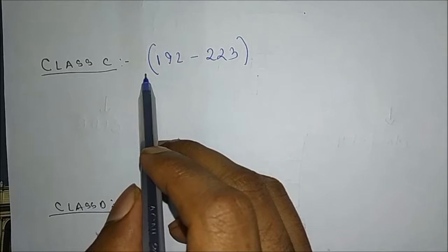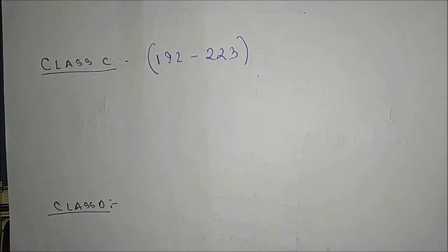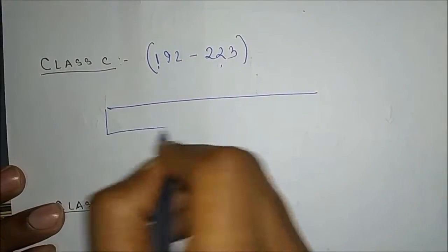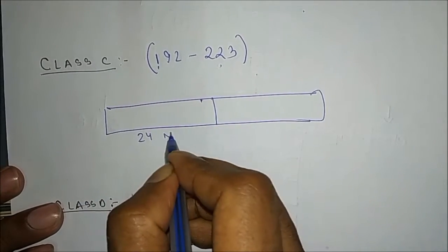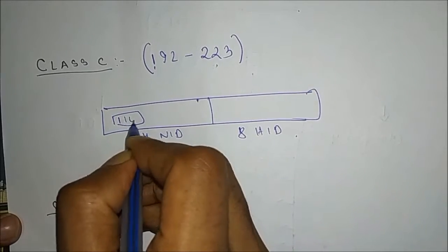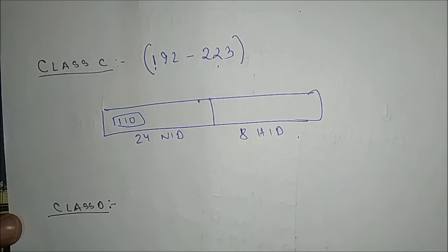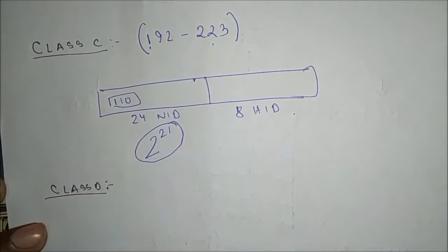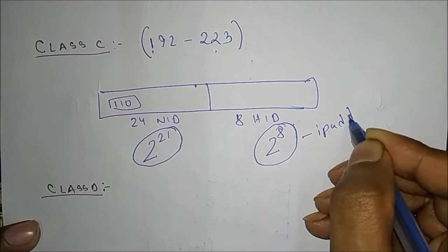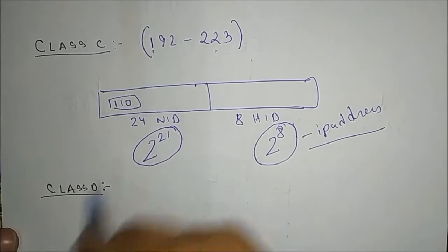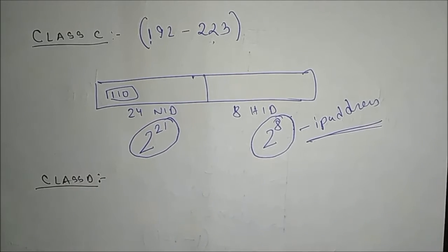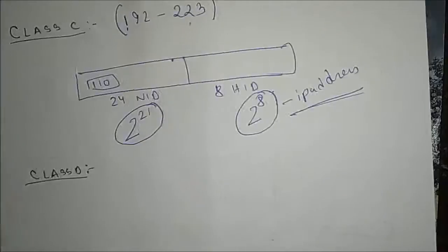Now moving to Class C. The range is 192 to 223. In Class C, the Network ID is 24 bits and the Host ID is 8 bits. In the 24-bit Network ID, 3 bits are fixed, leaving 21 bits — giving 2^21 possible network combinations. For the 8-bit Host ID, there are 2^8 possible IP addresses in Class C.